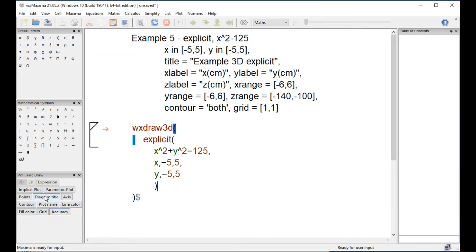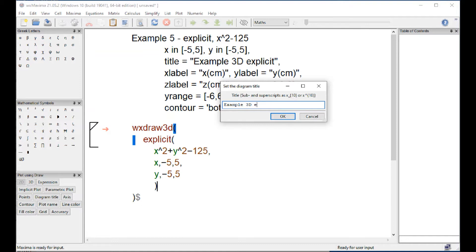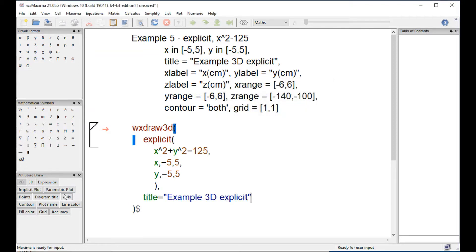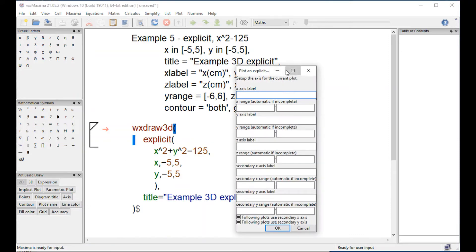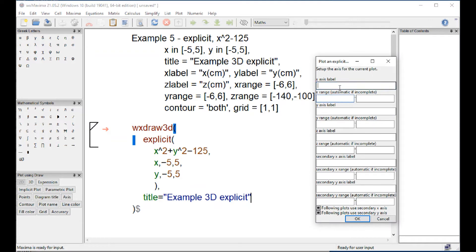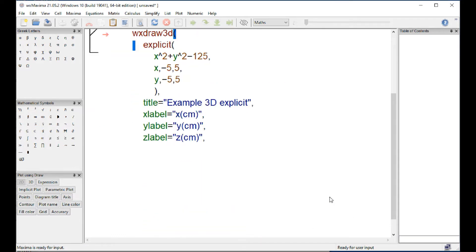Then our title is going to be example to the explicit. And axis we have X label X centimeters with an X range within minus 6 and 6, Y is going to be Y centimeters with a range within minus 6 and 6, and Z label is going to be Z centimeters with a Z range within minus 140 and minus 100. I've done the graph, so I know the labels, I mean the limits. And so we're building our command right here.